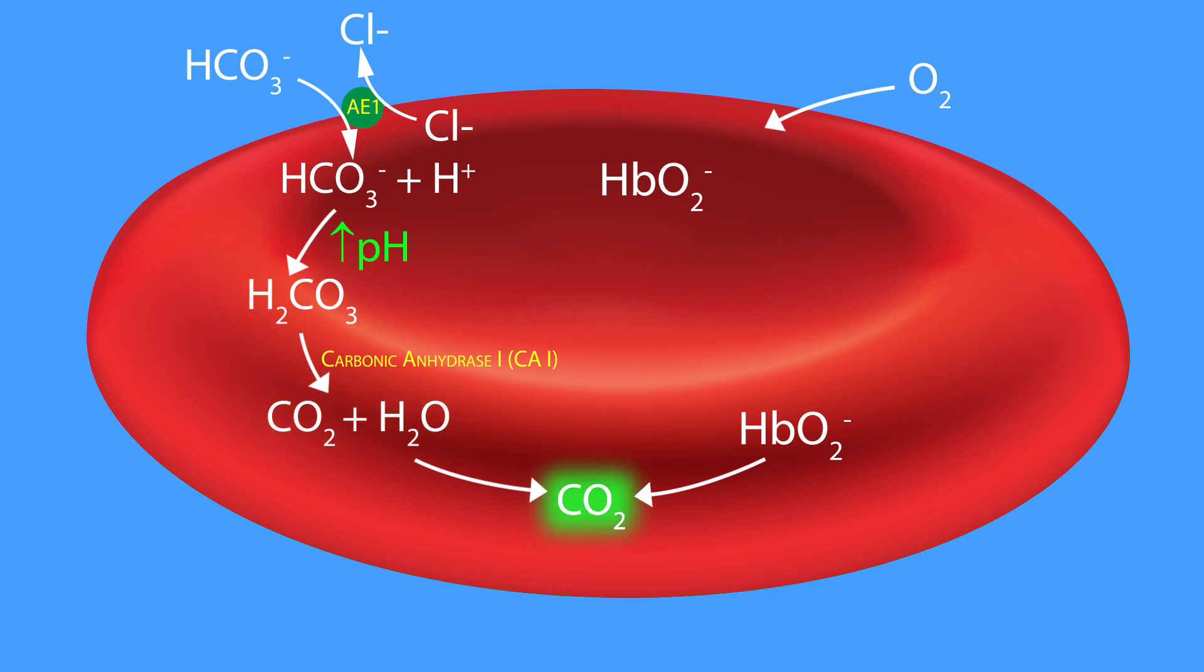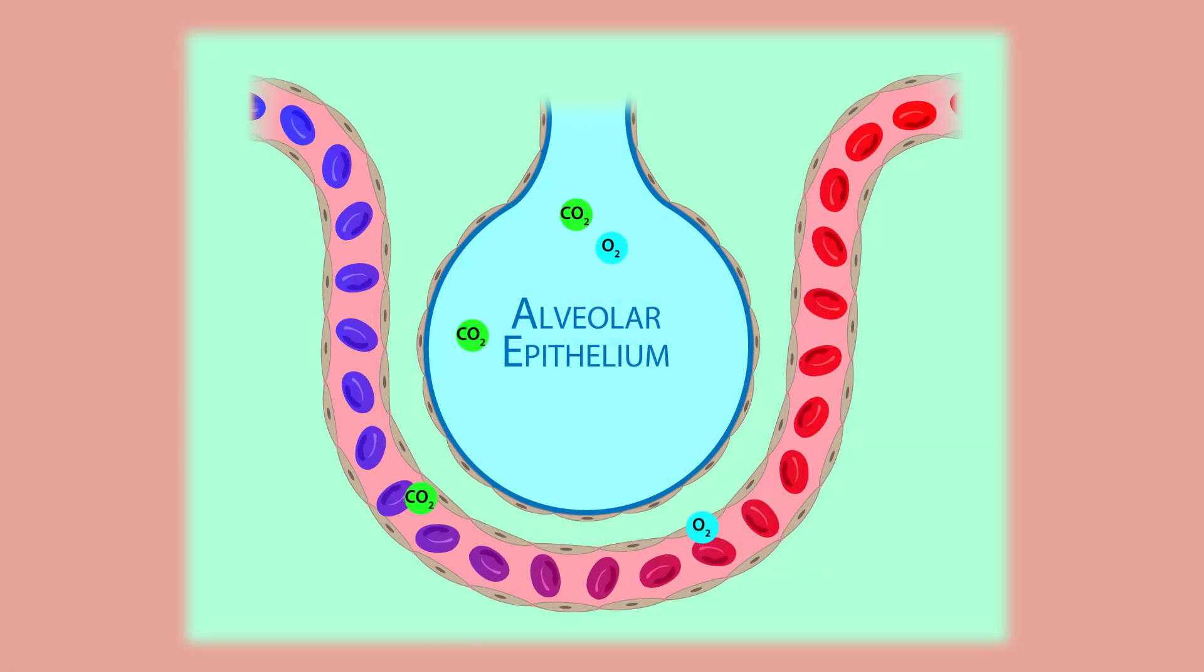Together, the converted carbon dioxide and carbon dioxide released from carboaminohemoglobin diffuse out of the red blood cell into the alveolar sac.